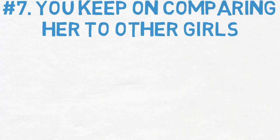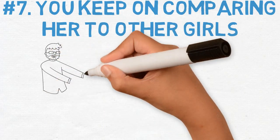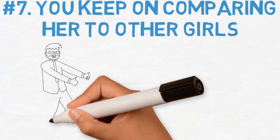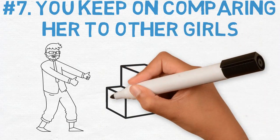You keep on comparing her to other girls. Even if you intend to compliment her and make her feel flattered by saying she's prettier or smarter than other women, it makes her think she's just an object being ranked.